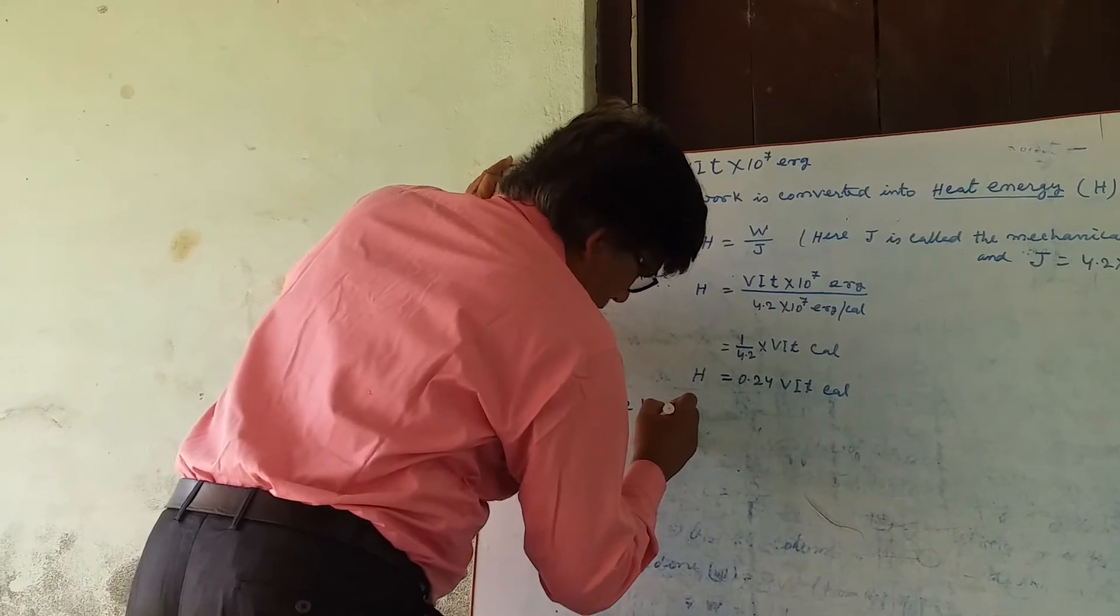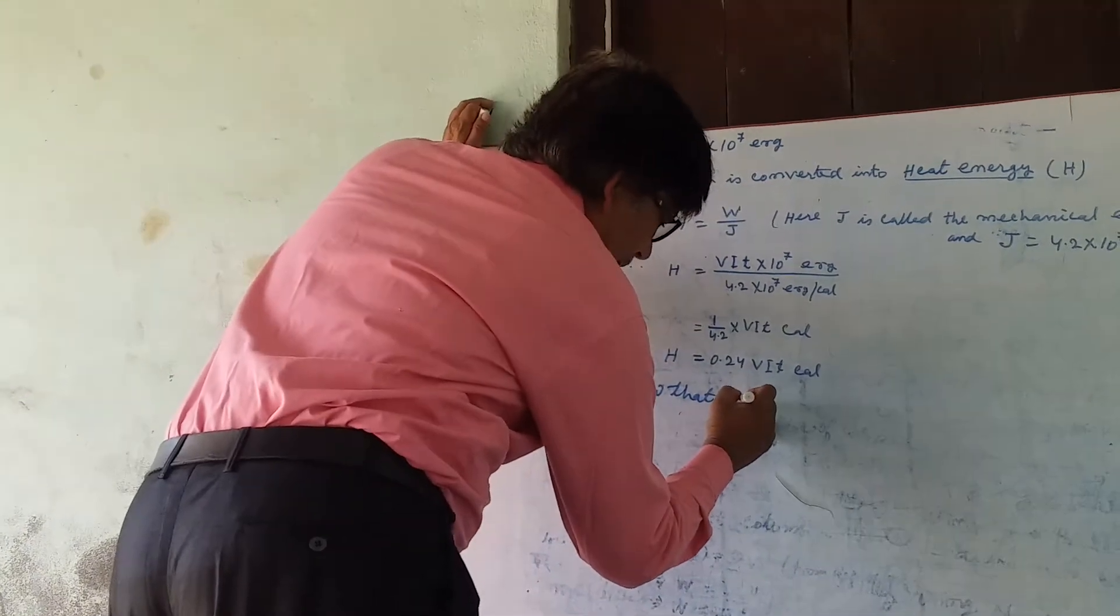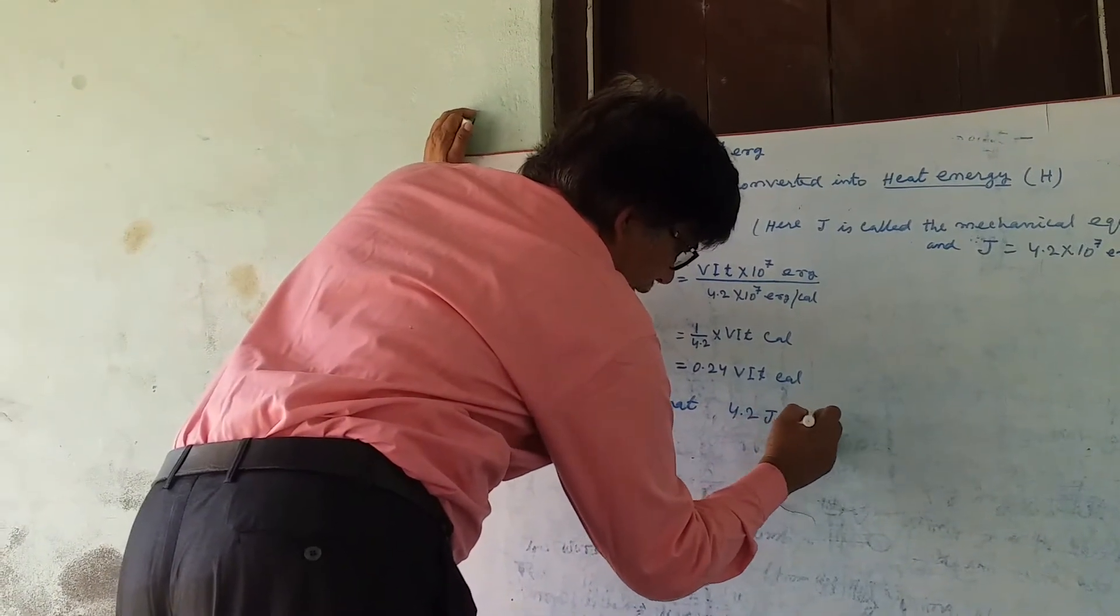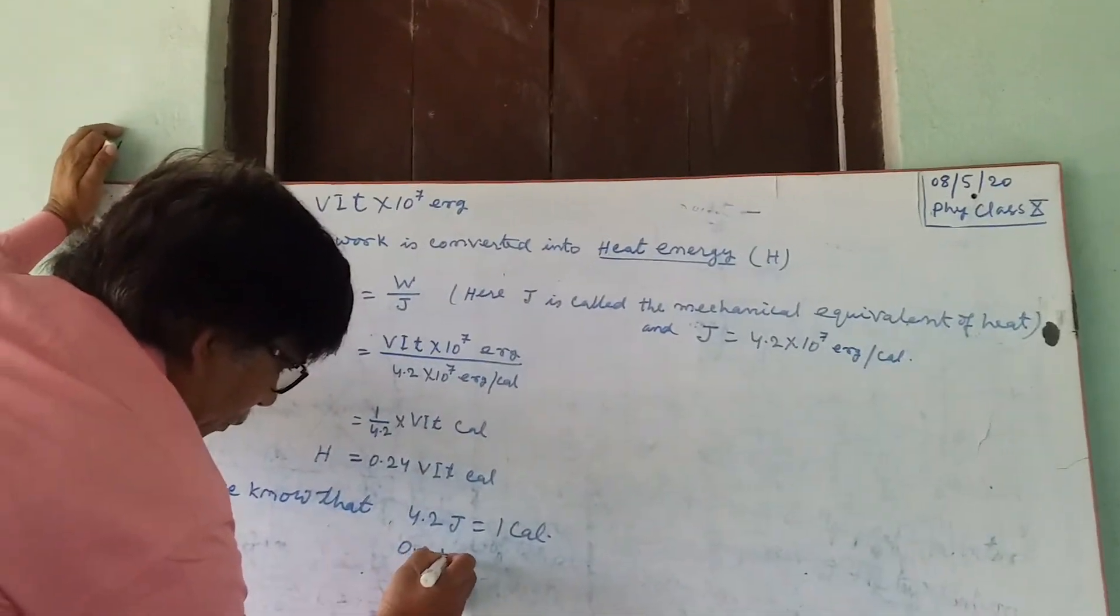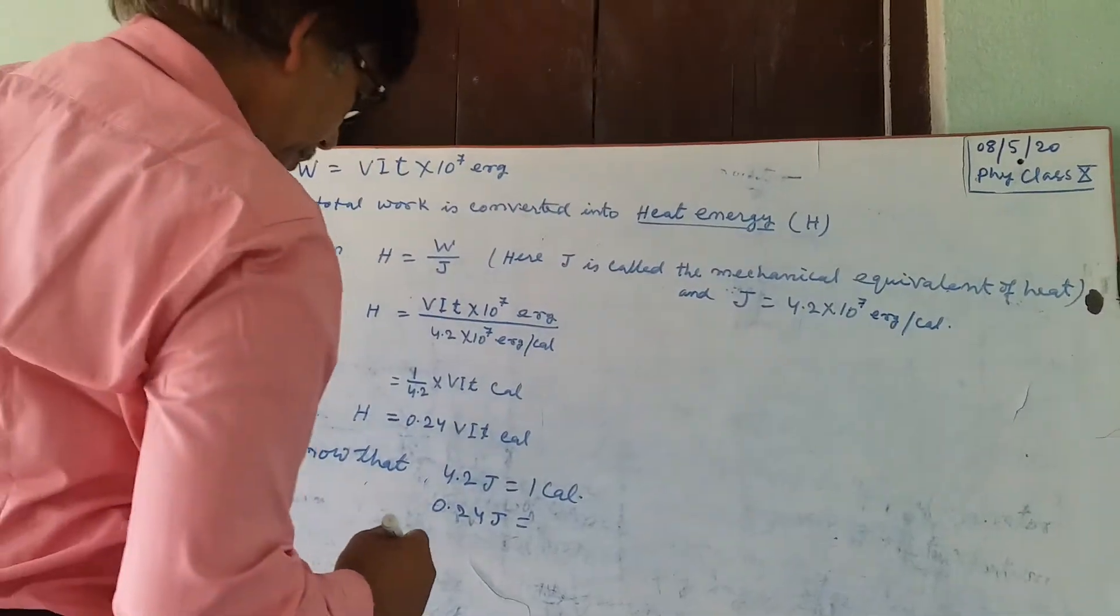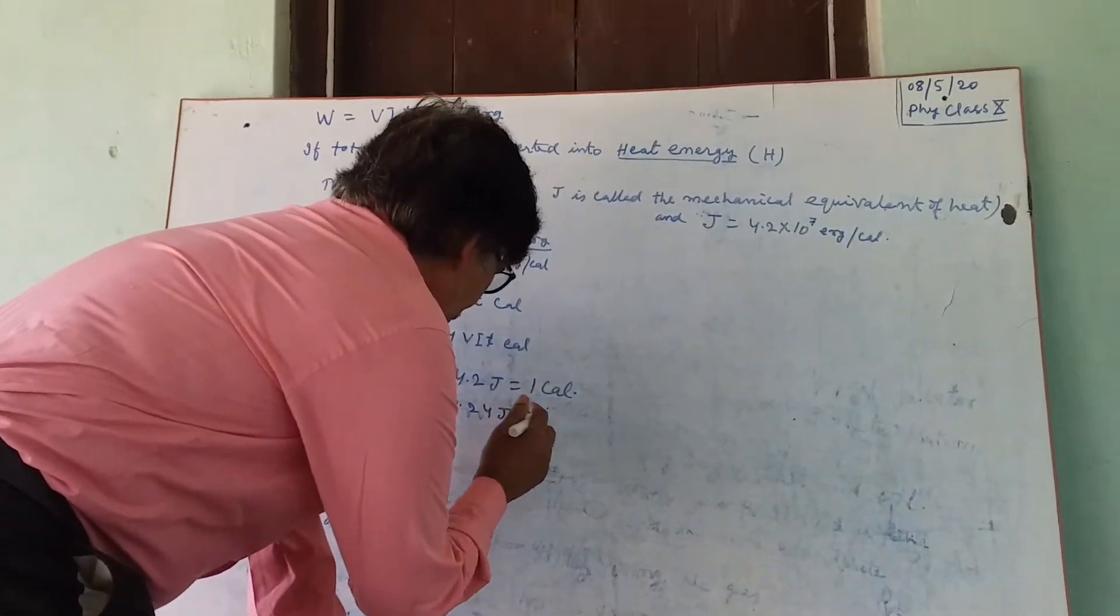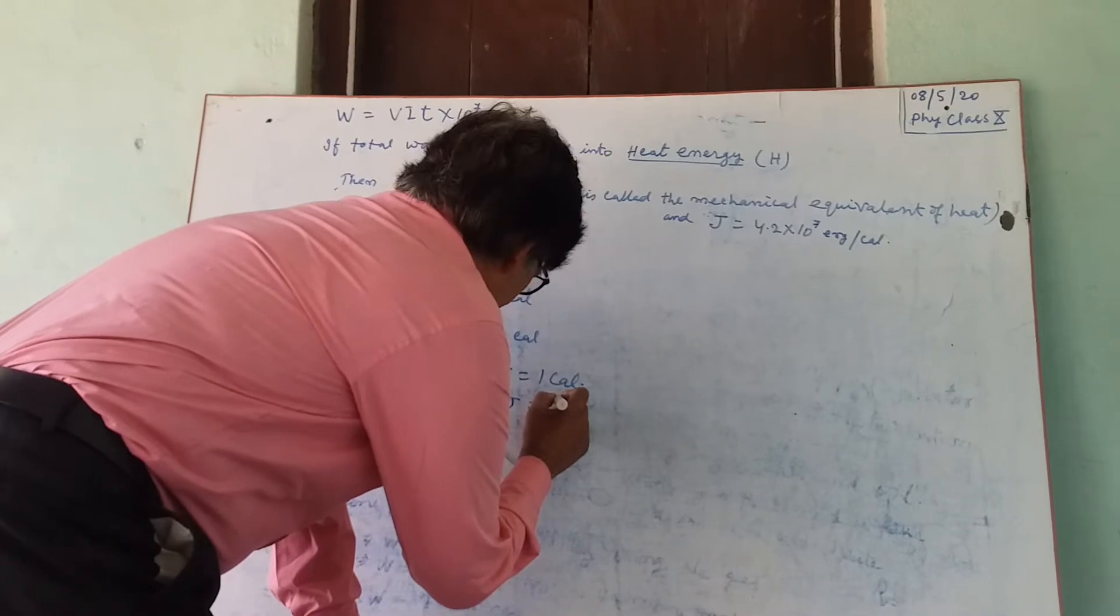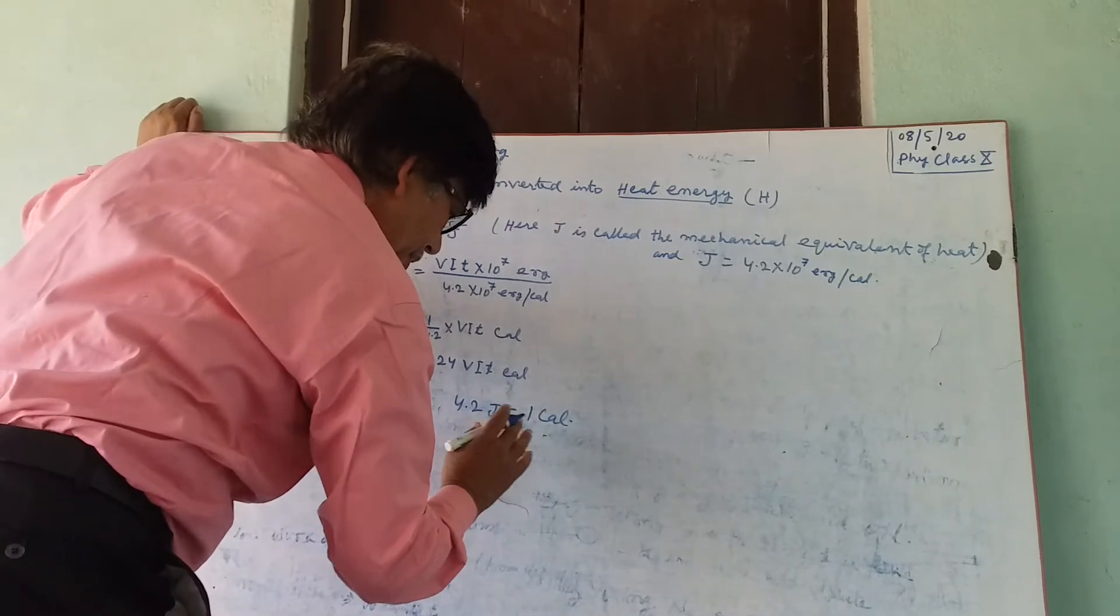We know that 4.2 joules equals 1 calorie. Therefore, 0.24 joules equals 1 calorie.